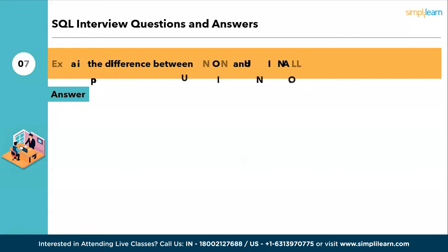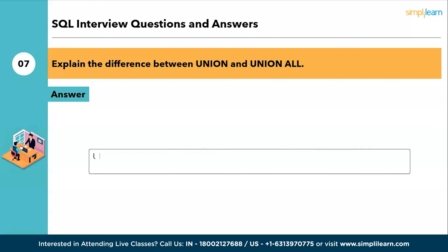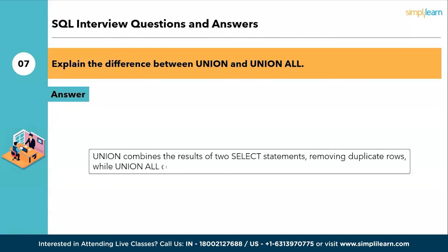The seventh question: explain the difference between UNION and UNION ALL. UNION combines the results of two SELECT statements removing duplicate rows, while UNION ALL combines the results including duplicates.